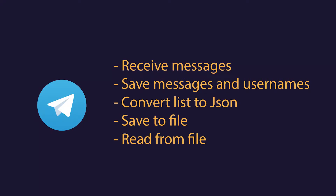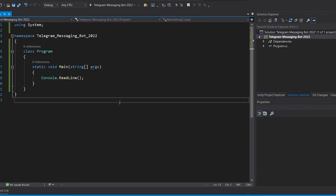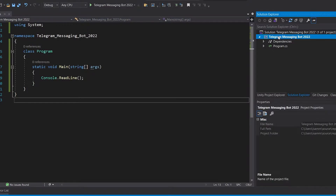Hello everyone. Over the past few years I've been uploading Telegram messaging bot tutorials using C# and .NET, but the library keeps updating and my videos are now outdated. In this tutorial we'll cover, using the updated library, how to receive messages from a bot, how to save the messages and usernames into a list, convert the list to JSON, save that JSON file to disk, and read from that JSON file.